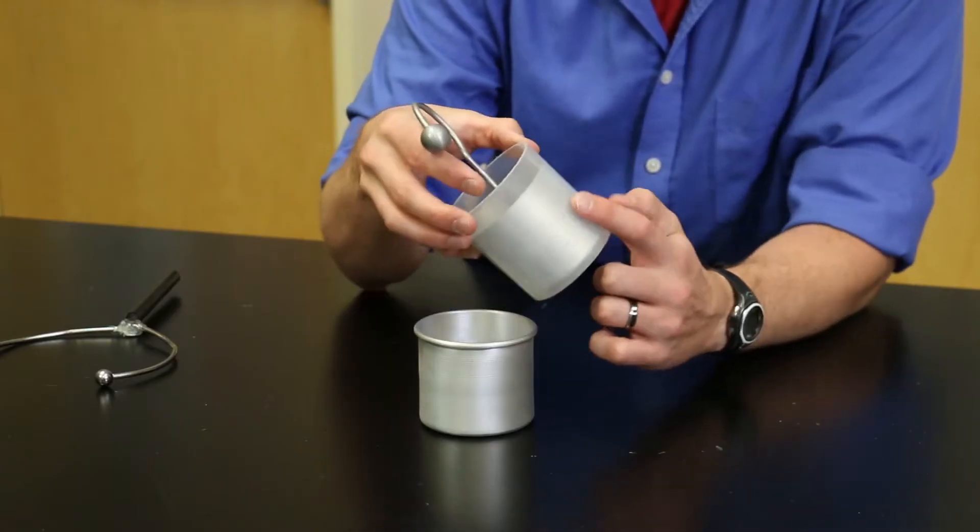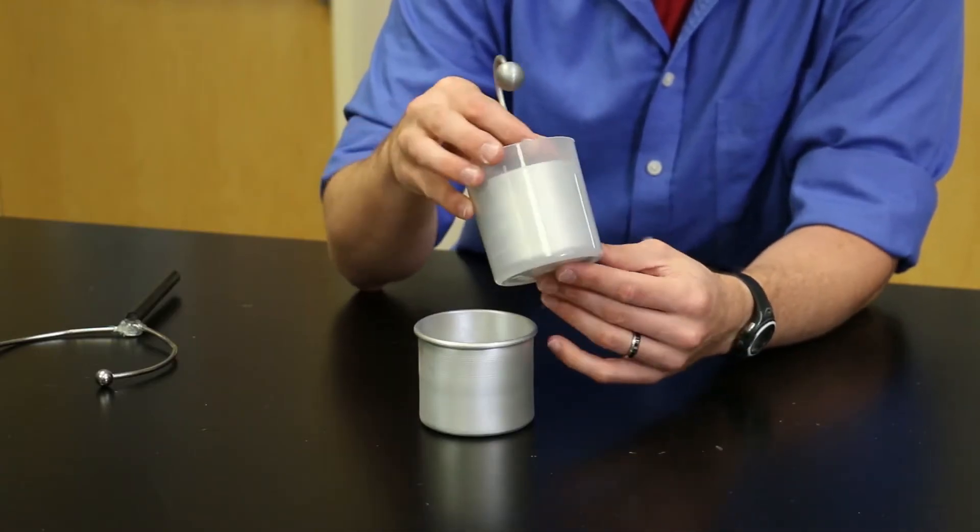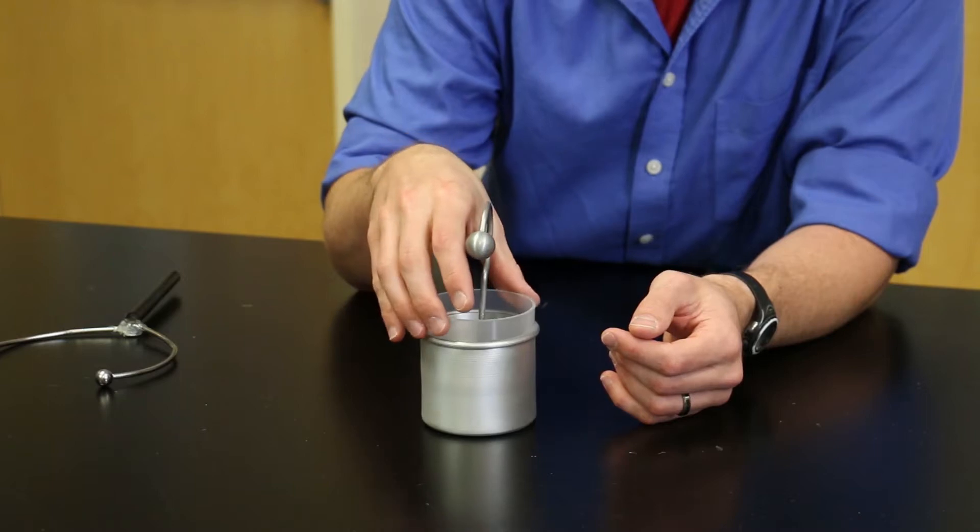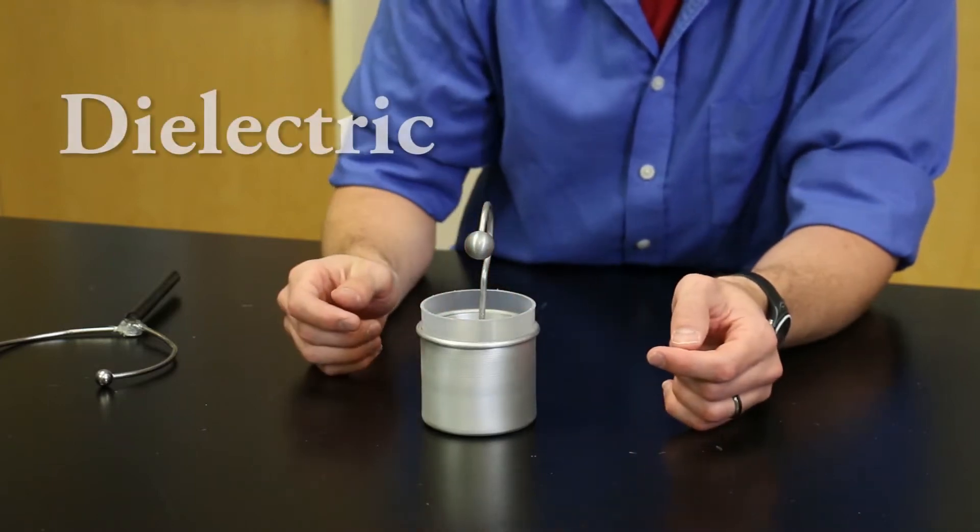Between the two metal cups is an insulating plastic cup, or glass jar, that prevents short circuits. In capacitor theory, this is usually called the dielectric.